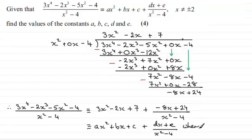And so this is identical then to the form that we had to show, ax squared plus bx plus c plus then dx plus e all over x squared minus 4, where we've got a equals 3, b equals minus 2, c equals 7, d equals minus 8, and finally e equals 24.